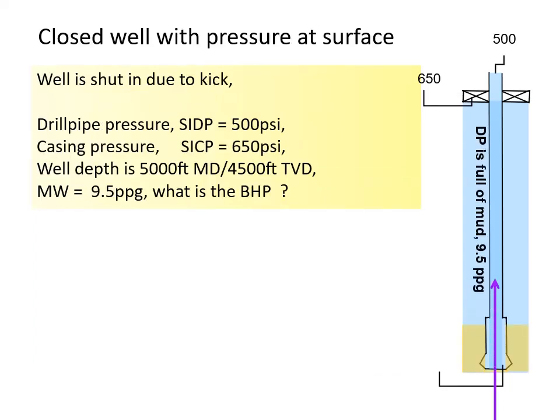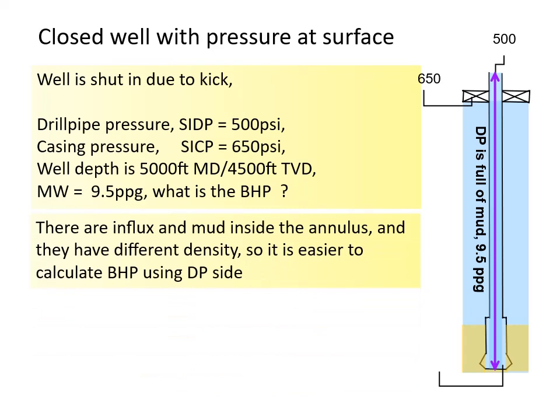Well is shut in due to kick. Drill pipe pressure SIDP is 500 psi. Casing pressure SICP is 650 psi. Well depth is 5000 feet MD, 4500 feet TVD. Mud weight is 9.5 ppg. So what is the bottom hole pressure? There are influx and mud inside the annulus, and they have different density, so it is easier to calculate bottom hole pressure using DP side.